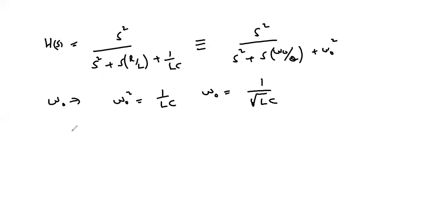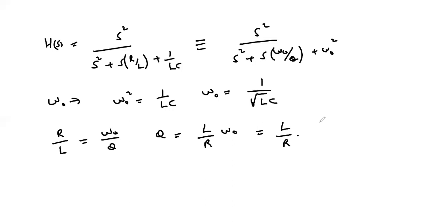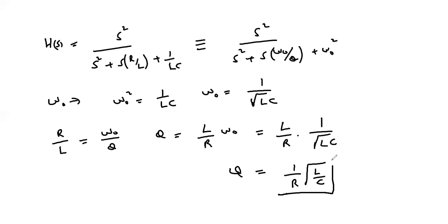From the coefficients of s in the denominator, R/L equals ω₀/Q, so the quality factor Q equals L over R times ω₀, which can be written as L over R multiplied by 1 over the square root of LC, which simplifies to (1/R) times the square root of L/C. That is the implementation of the passive second order high pass filter.